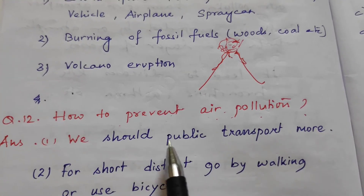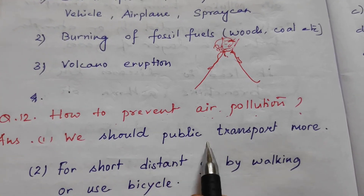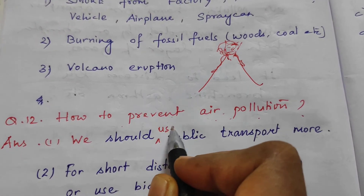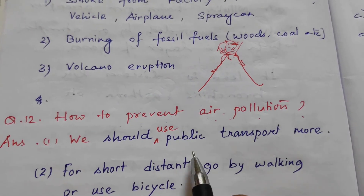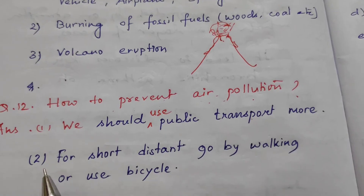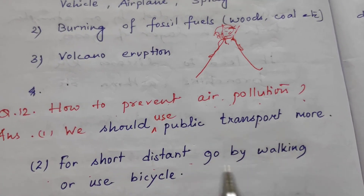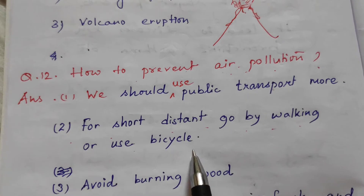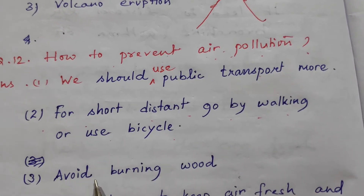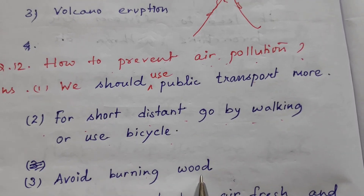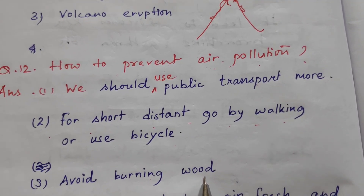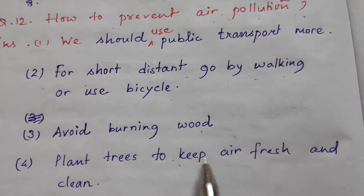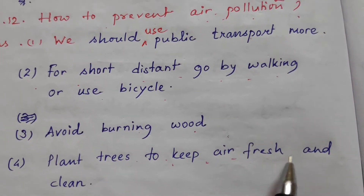How to prevent air pollution? Answer: Number 1, we should use public transport more. Number 2, for short distance go by walking or use bicycle. Number 3, avoid burning wood. Number 4, plant trees to keep air fresh and clean.